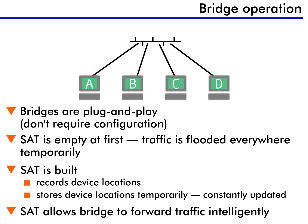Bridges know where all devices are located on the network, and they forward traffic only to the specific destination station. This makes them far better equipped to control traffic than repeaters, which send traffic everywhere. The SAT allows the bridge to forward traffic intelligently, which is why bridges have replaced repeaters in networks today. However, bridges are much more than simply fancy repeaters — they've grown up and become layer 2 switches. But switching is another lesson.